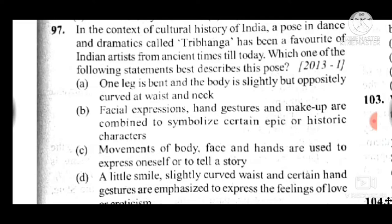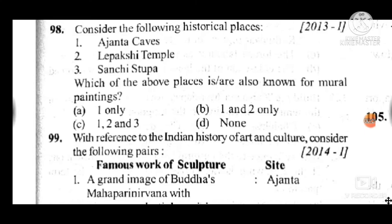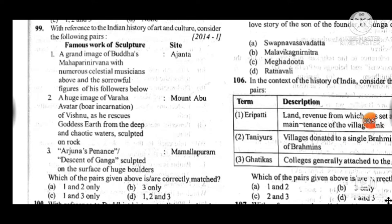Question 98: Consider the following historical places — Ajanta caves, Lepakshi temple, and Sanchi stupa. Which of the above is also known for mural paintings? Answer is B — one and two only. Question 99: With reference to Indian history of art and culture, the answer to question 99 is C — one and three only; statements one and three are correct.